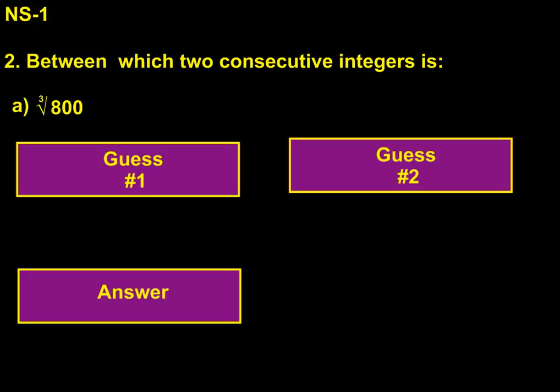We have to try and figure out what number times itself 3 times is going to give me 800 as an answer. Well, the first thing that pops into my head is 10, because 10 times 10 is 100, times 10 is 1,000. So I'm going to toss that out as my first guess.